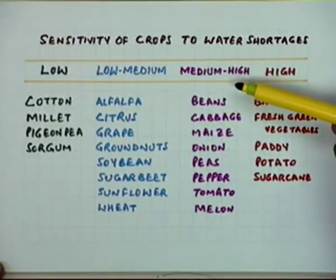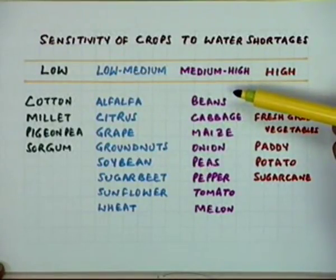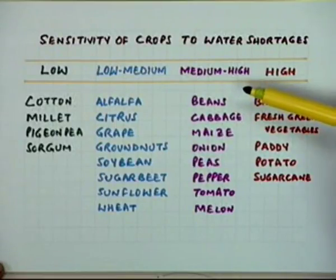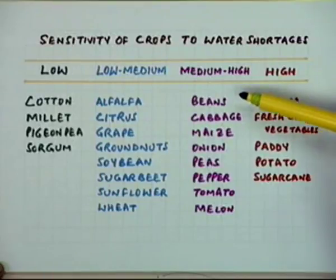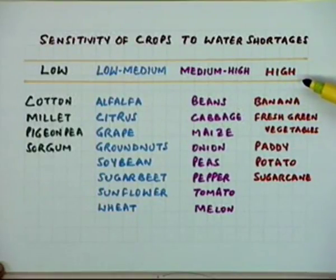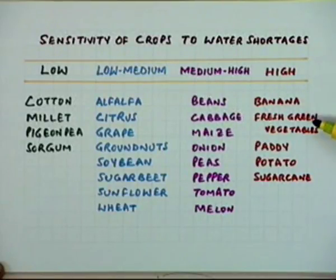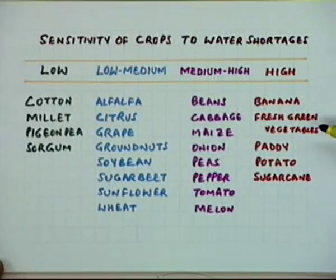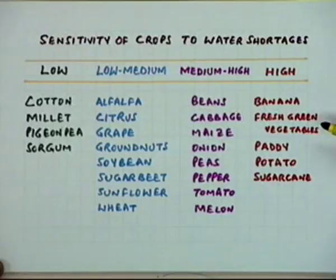Similarly, the next higher level has medium-high sensitivity. The crops with the maximum or highest sensitivity are banana and fresh green vegetables. Most fresh green vegetable crops are very sensitive and cannot tolerate any deficit in soil moisture levels.